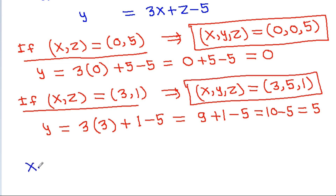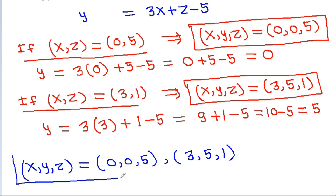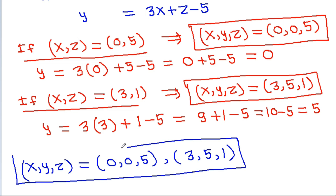So (x, y, z) is equal to (0, 0, 5) and (3, 5, 1). These are the two values of x, y, and z.